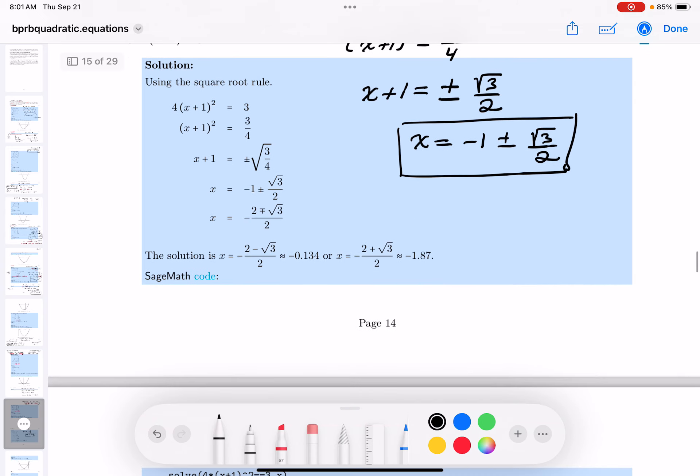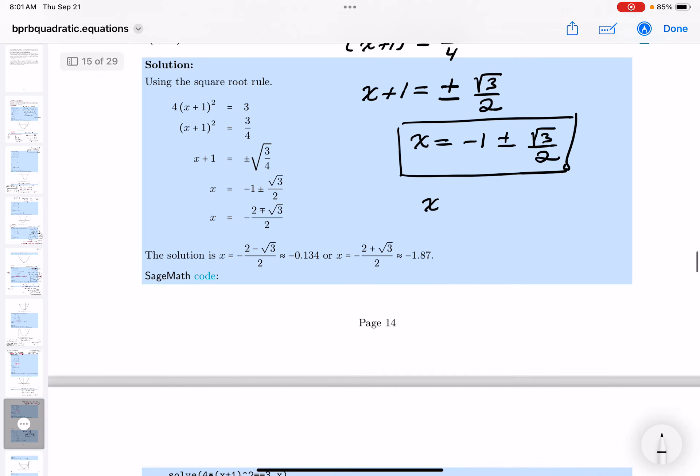A lot of teachers say you've got to get one term. Let me do that now. x equals, what do you get there? Common denominator of 2. Then you get -2 ± √3.